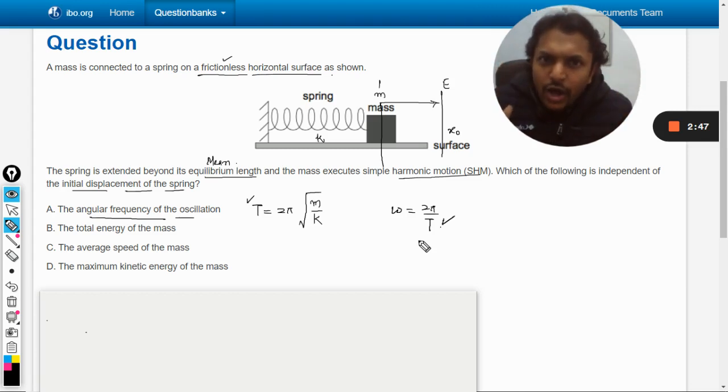Because when we increase the amplitude, the force increases—the restoring force increases—thereby the acceleration is higher. Thereby the velocity of the body becomes higher. So a bigger distance has to be covered with bigger velocity, thereby keeping the time period the same. That is why our answer will be A. But let us check B, C, and D also.